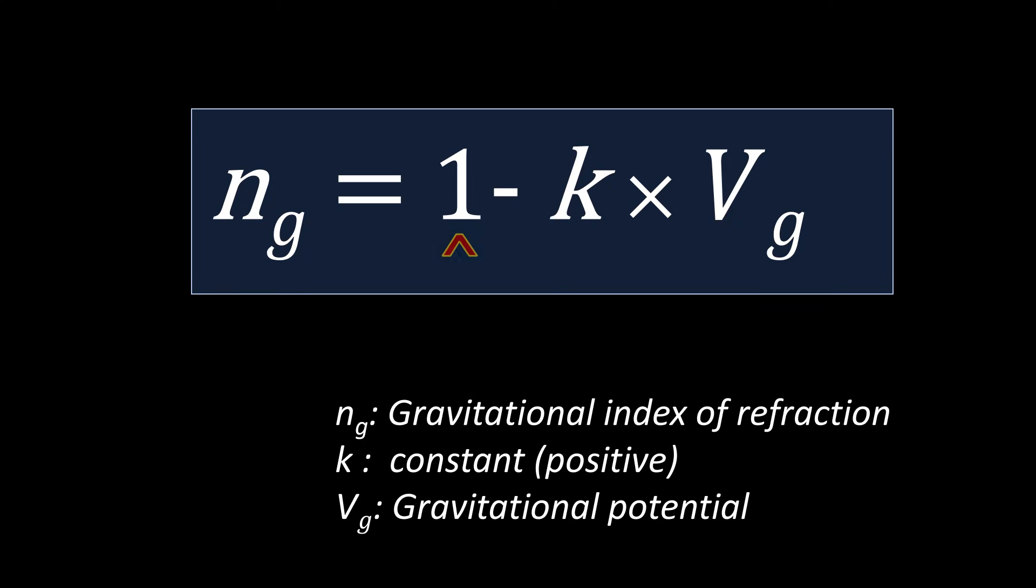Also, let's make sure that the gravitational index of refraction and the potential have an opposite sign. The constant added has a positive value and determines the proportionality between the two, and in the simulation, the value of the constant is a bit arbitrary. We'll just put in a value that gives us nice results in the simulation.